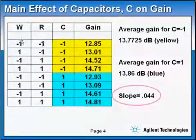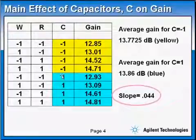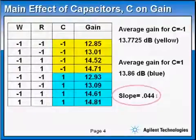Notice in the table here that the first top four experiments have capacitor as minus one and the bottom four experiments have capacitor plus one. We get for C minus one in the yellow an average gain, the average of these gains is 13.7725 dB. But for C equal plus one the average gain would be in the blue 13.86 dB. So we calculate the slope per unit and we find out that the gain changes by 0.044 dB per unit.